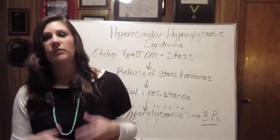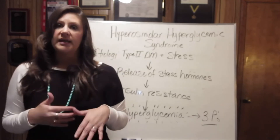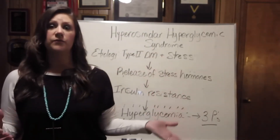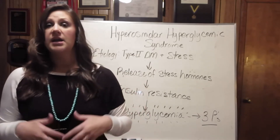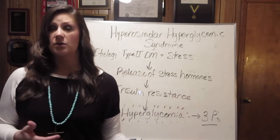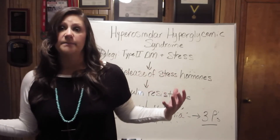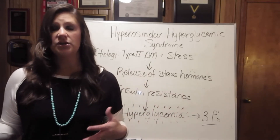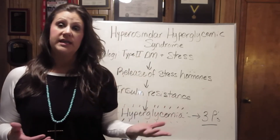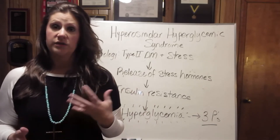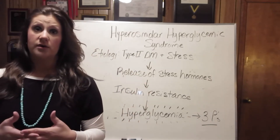Get IV fluids started, get insulin drips going, and get blood glucose down. Some of the 3 P's are the same as with DKA patients, but you are not going to see ketonuria. You are not going to see acidosis. You are not going to see the same GI signs and symptoms, because DKA patients will often have nausea and vomiting that accompany the acidosis. Also, potassium is not going to be as huge a concern initially with HHS.